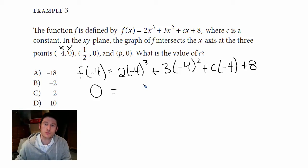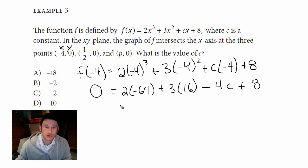Okay, so 4³ is 64, right? So that's going to be 2 × -64. This is going to be 3 × 16. That's going to be -4c, and that's going to be 8. Okay, so what does 64 times? 128. So -128. That's going to be +48 - 4c + 8, again, still equal to zero.